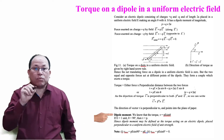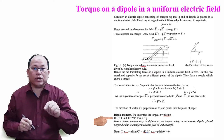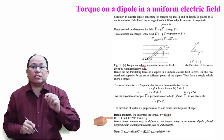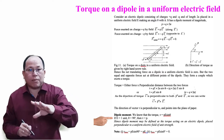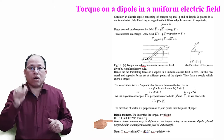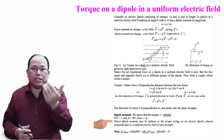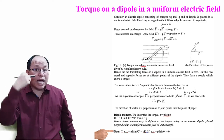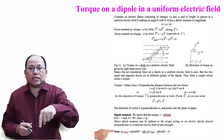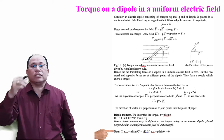Now for dipole moment: we know that torque tau equals pE sin theta. If we substitute E equal to one unit and theta equal to 90 degrees, then tau equals p. Torque is maximum (tau max equals pE) when theta equals 90 degrees, since sin 90 degrees equals 1. Torque is minimum (tau min equals 0) when theta equals 0 degrees or 180 degrees, since sin 0 degrees equals zero.